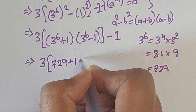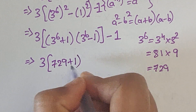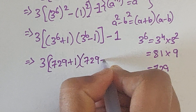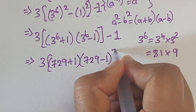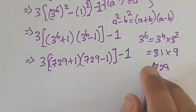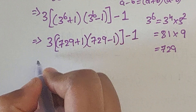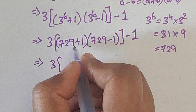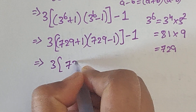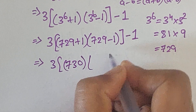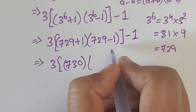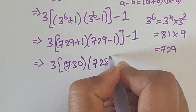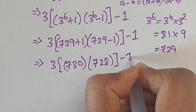So we have 729 plus 1 and 729 minus 1, close the bracket, minus 1. Now 729 plus 1 equals 730, and 729 minus 1 equals 728, close the bracket, minus 1.